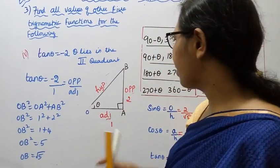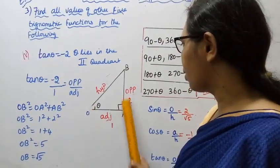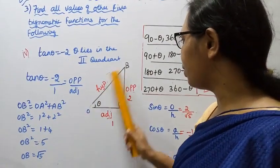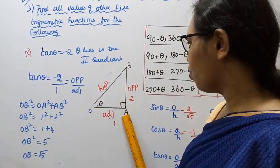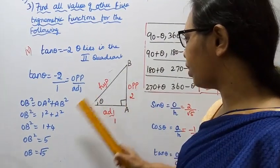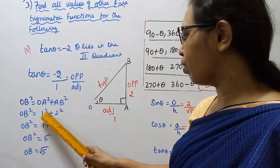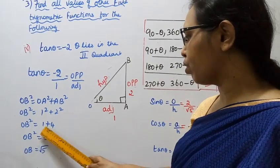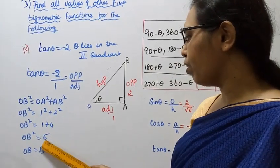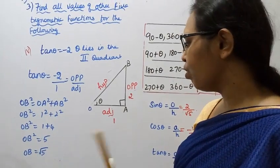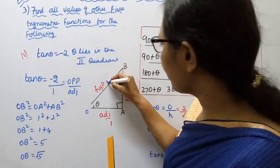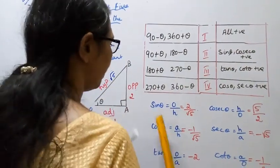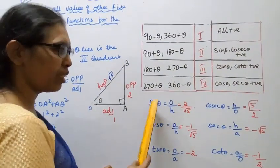By Pythagoras theorem: OB squared equals OA squared plus AB squared. OA squared equals 1 squared equals 1, AB squared equals 2 squared equals 4. So OB squared equals 1 plus 4 equals 5, giving hypotenuse OB equals root 5.